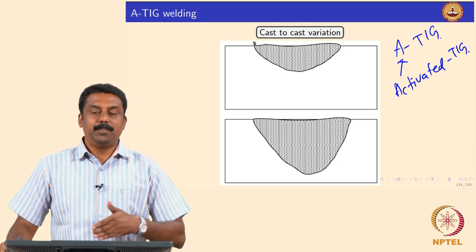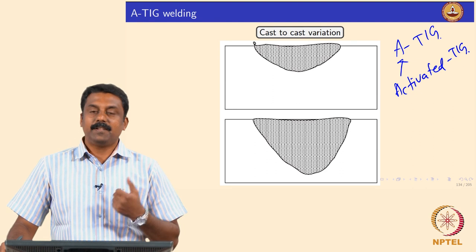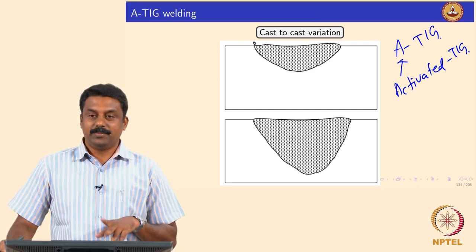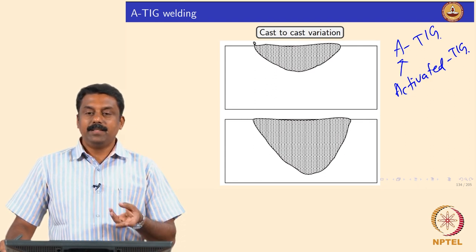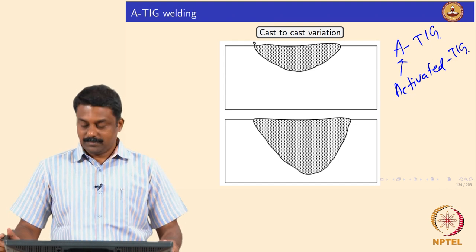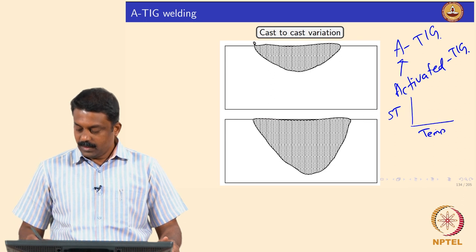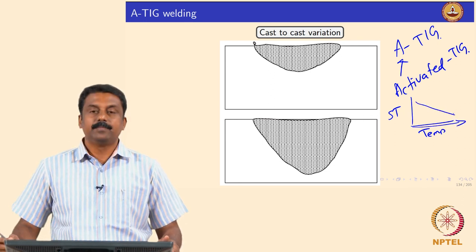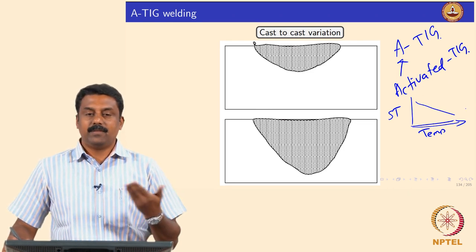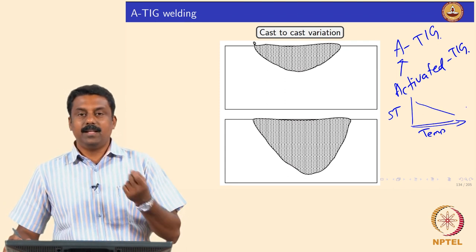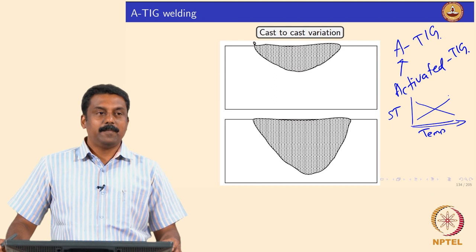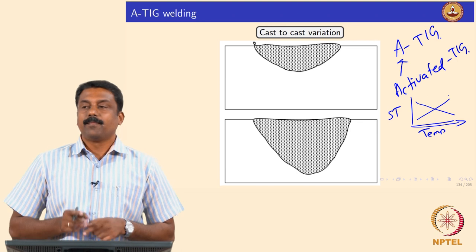A classical example we always face is because of sulphur. When you have sulphur, the surface tension of the liquid pool changes significantly. Imagine two cases: in one case some element concentration is increased such that surface tension of the liquid decreases as a function of temperature. In the other case, surface tension increases as a function of temperature. These two scenarios can play a significant role in determining weld pool geometry.